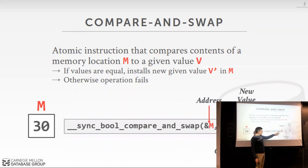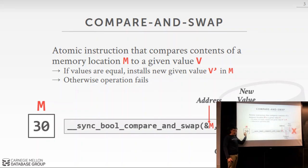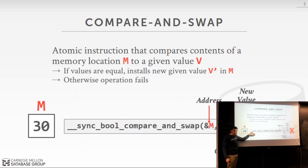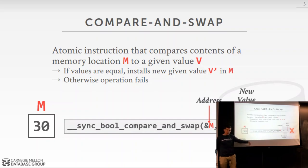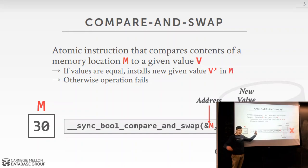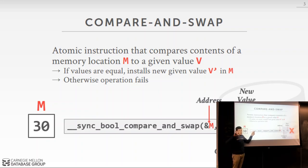If I try to do the same operation but give a compare value of 25 to install 35, the instruction would fail because the value doesn't match my compare value and it would return false — meaning this didn't actually install the correct value. We can use compare and swap for timestamp increments or transaction ID increments, like we did in OCC last class.